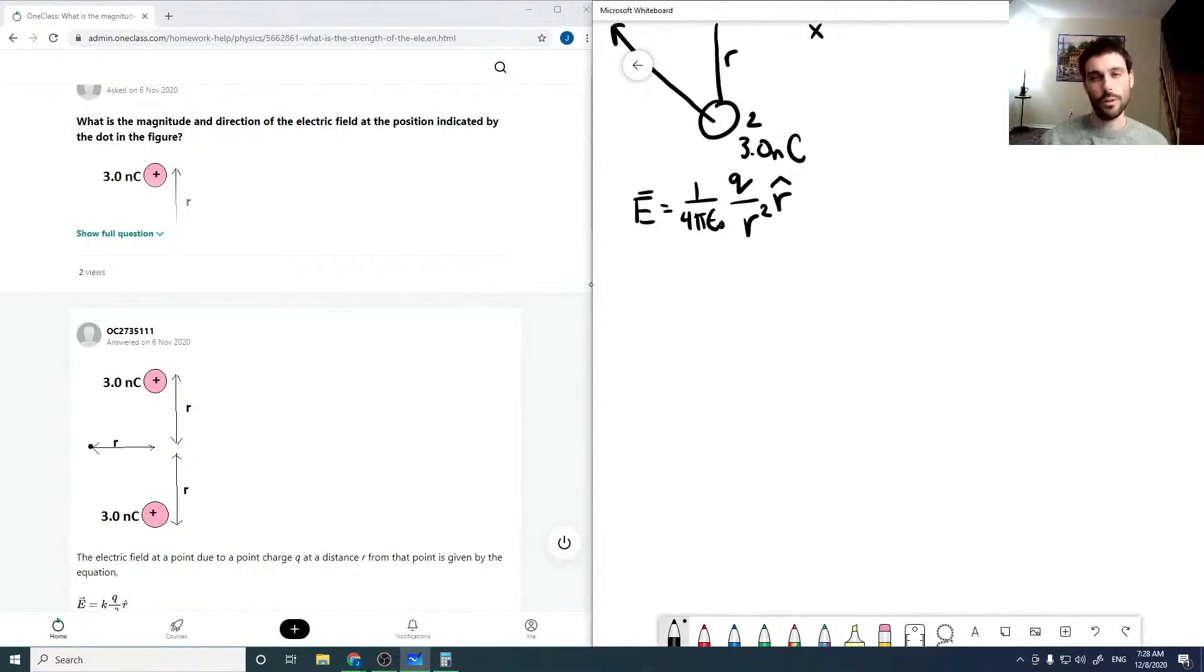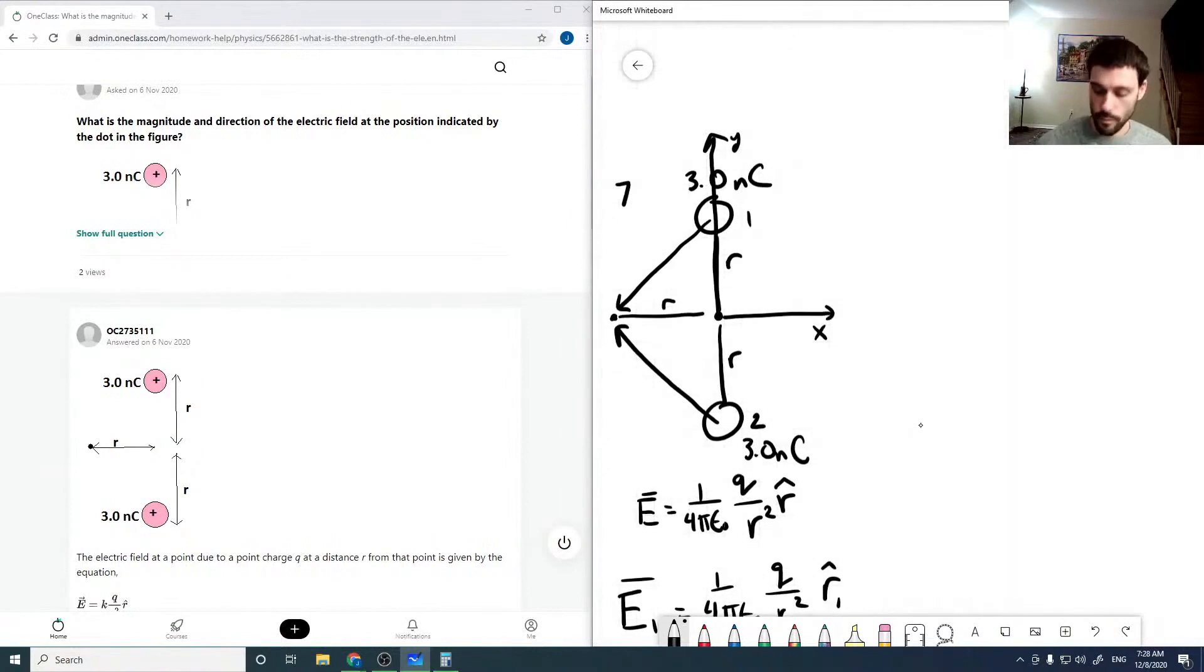For E1 we would have one over four pi epsilon not, q over r1 squared, r1 hat. Looking at the figure, our r1 vector from this position is minus r x hat minus r y hat, and our r2 vector is minus r x hat plus r y hat.